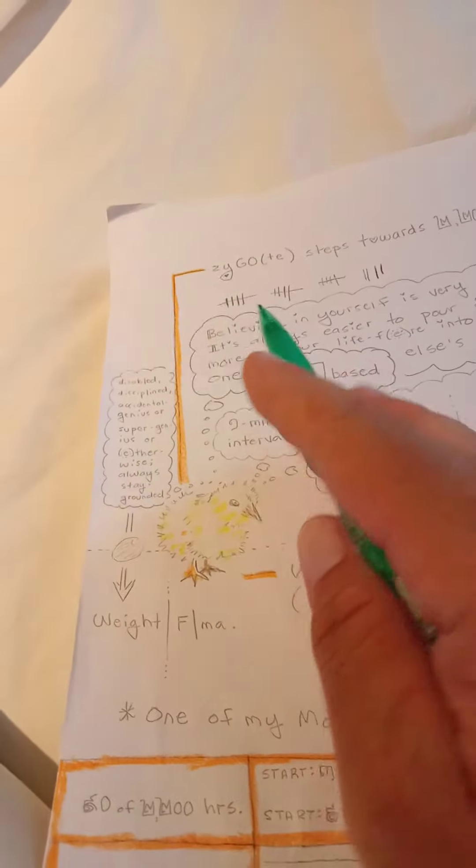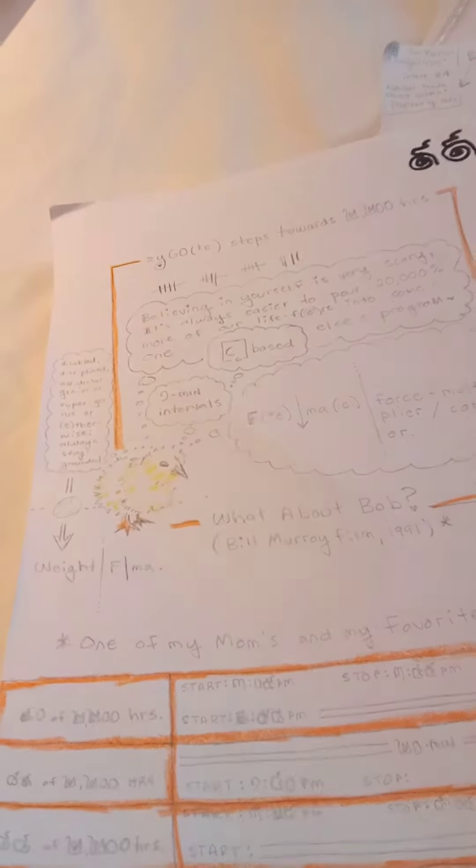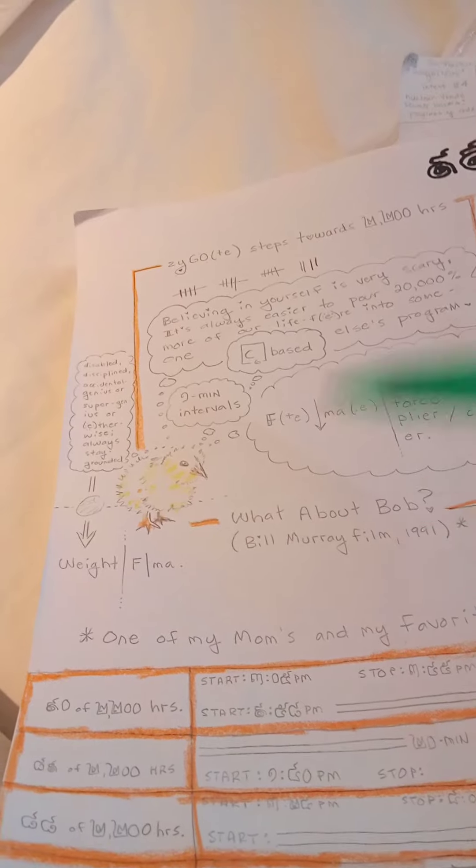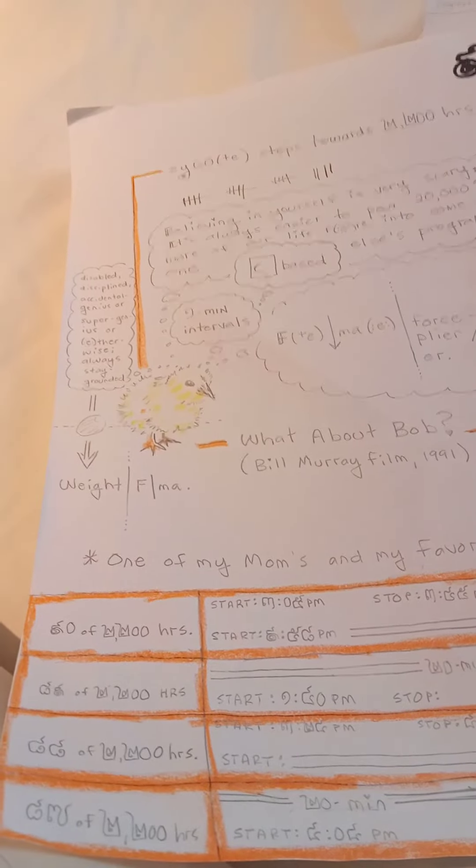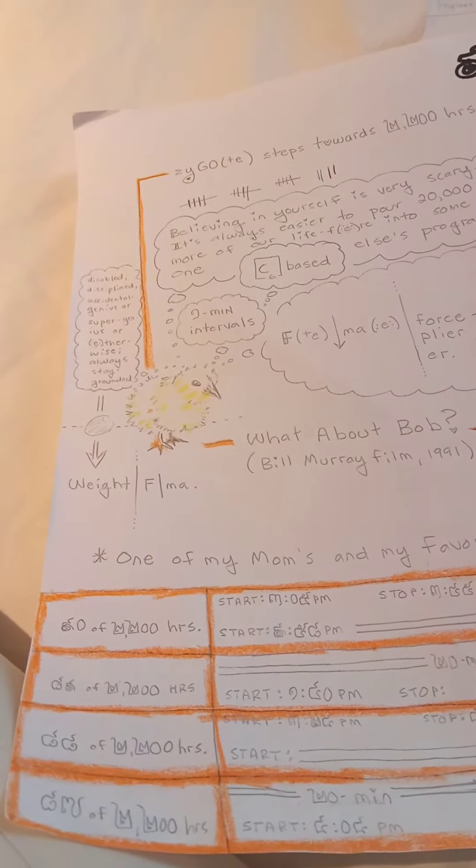It's from the movie Bill Murray, 'What About Bob,' where it's like baby steps, baby steps. A lot of times when you have ADHD, one of the biggest problems is you actually psych yourself out more than you psych yourself up.